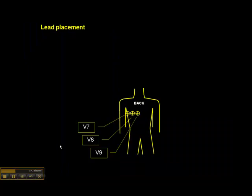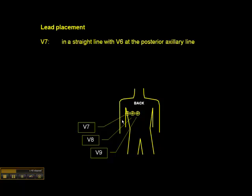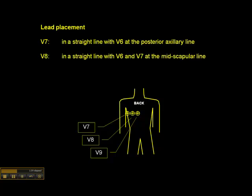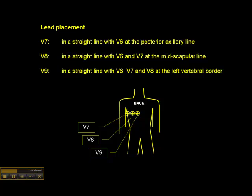If you really want to confirm there's a posterior wall infarct, we place three additional electrodes on the back: V7, V8, and V9. They go in a straight line continuing from V6. V7 goes at the posterior axillary line, V8 goes at the midscapular line, and V9 goes at the left vertebral border.